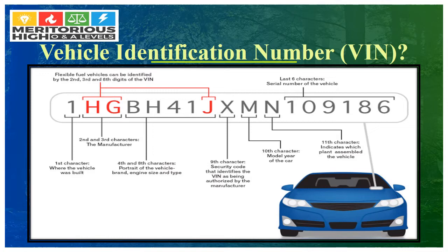Let's have a closer look. The first character identifies where the vehicle was built. The flexible fuel vehicle can be identified by the 2nd, 3rd, and 8th digits of the VIN. The 4th to 8th characters are reserved for the brand, engine size, and type. The 9th character is the security code that identifies the VIN as being authorized by the manufacturer. The 10th character identifies the model year of the car. The 11th character indicates which plant assembled the vehicle. The last 6 characters are the serial number of the vehicle.